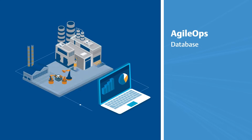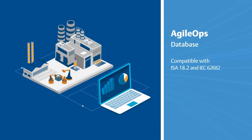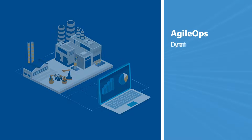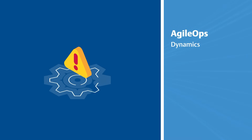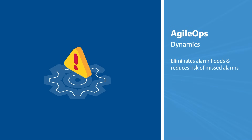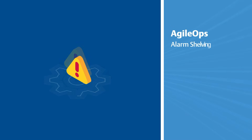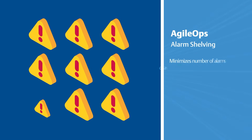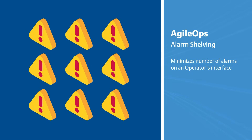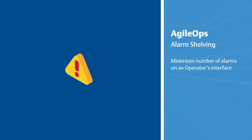AgileOps Database, compatible with industry standards to monitor system configuration changes, including alarm settings. AgileOps Dynamics, configuring alarm changes based on operating state. AgileOps Alarm Shelving, providing advanced shelving capabilities to reduce nuisance alarms.